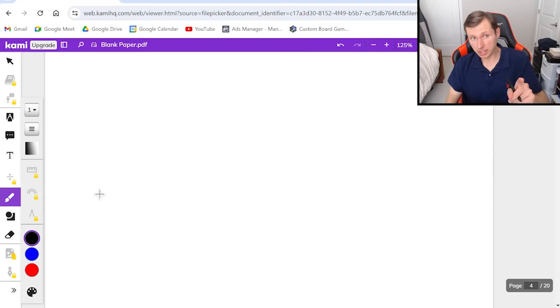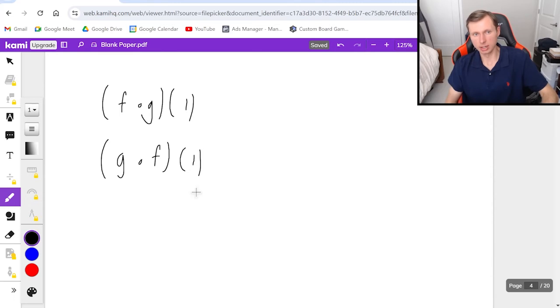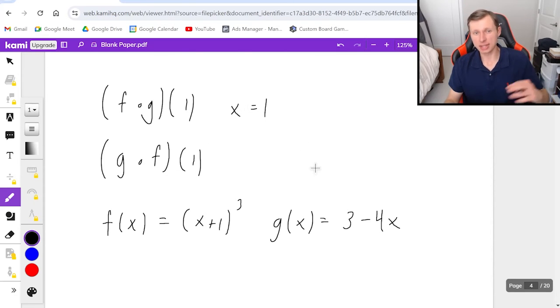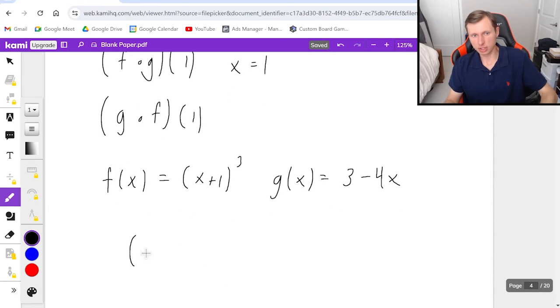Now I've got one more question for us today. This one will be different than the ones we previously did because I want you to find f of g of 1 and g of f of 1. But this is going to be two new f(x) and g(x) functions. For this one, f(x) is x + 1 cubed, and g(x) is going to be 3 - 4x. So all it means when we say f of g of 1 or g of f of 1—all we're saying is we're plugging in x = 1 at the very end of the problem. But I'm still going to do the same thing I always do.